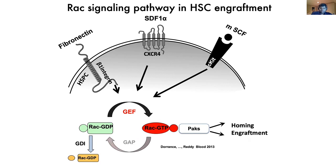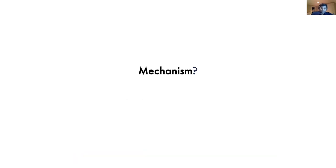When I joined the lab, we found that such effector proteins include a group of kinases called PAK2 kinases, and we discovered a particular role for these in hematopoietic stem cell homing to the bone marrow as well as stem cell engraftment. However, the mechanism was unknown, and my project was to understand how PAK kinases contribute to hematopoietic stem cell function.